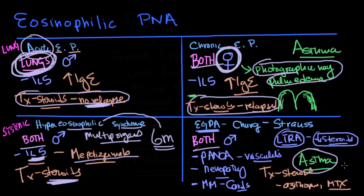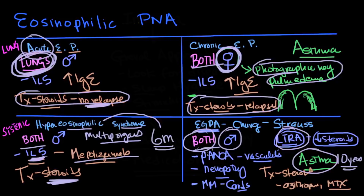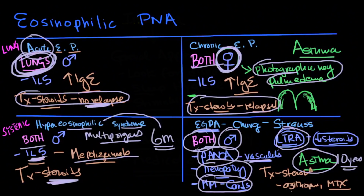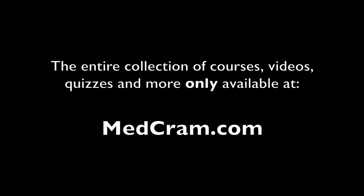For EGPA/Churg-Strauss, patients sometimes have had asthma for up to 10 years. Remember that leukotriene receptor antagonists like montelukast can unmask it. It is found both in blood and lungs, typically in males. P-ANCA drives vasculitis, which can cause purpura, nodules, petechiae, and rarely diffuse alveolar hemorrhage. You will see neuropathy and morbidity and mortality from cardiac issues. Treatment includes steroids, azathioprine, and methotrexate. Know the difference between acute and chronic, and know whether eosinophilia is in both lungs and blood or lungs only.